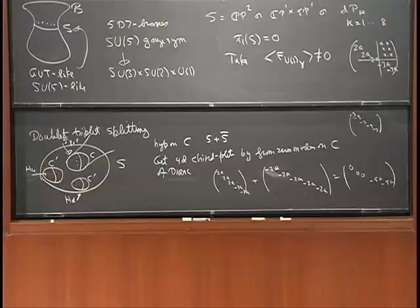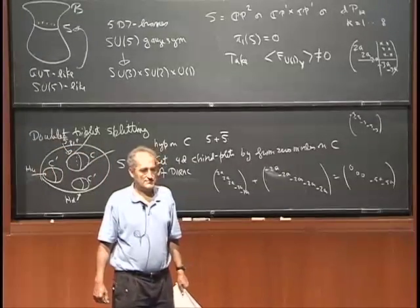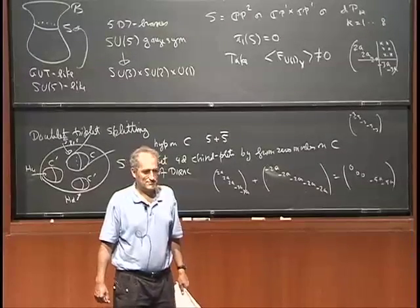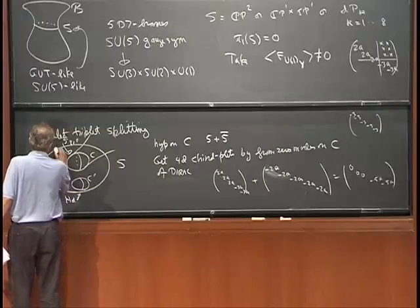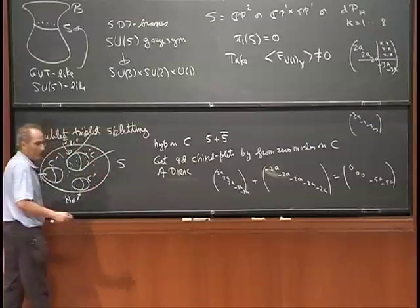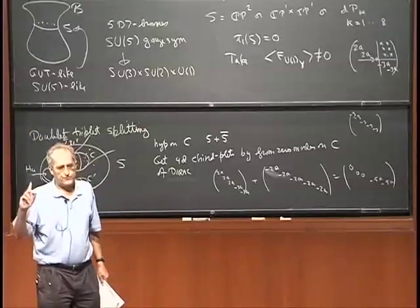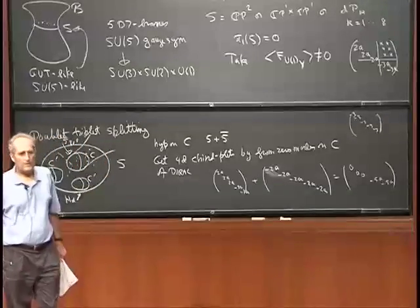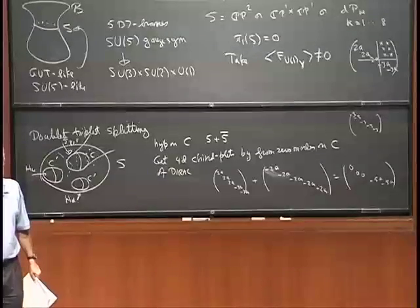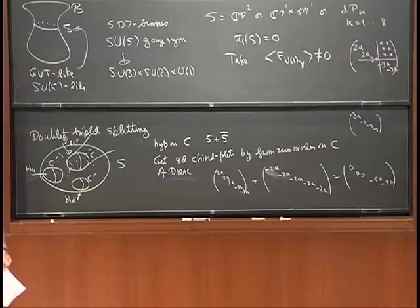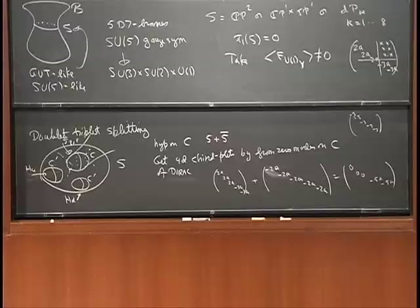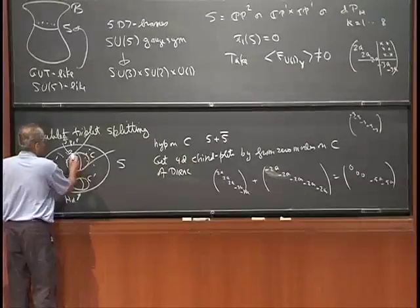The three families of 5-bars come out because there are three solutions to the index problem. There's something to distinguish those three families: they have different wave functions, so they won't get the same masses. Their masses are going to come from some intersections. The mechanism described would only give, for each intersection, mass to one linear combination of charged leptons. So the picture has to be complicated enough to contain three of those intersections.